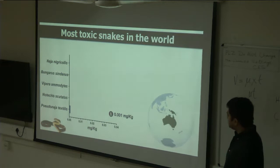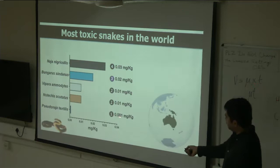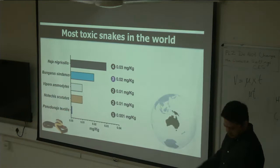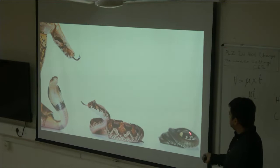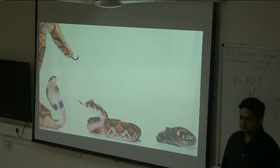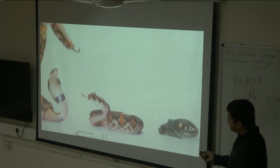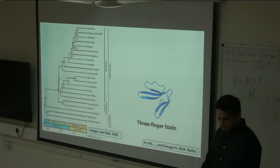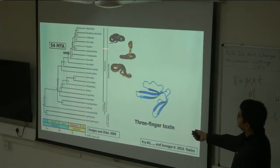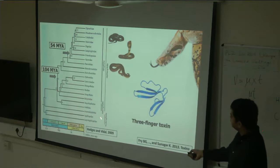What about boas and pythons — are they venomous? They don't make use of venom to capture prey. But surprisingly, when we looked at their saliva and venom glands, we actually found three-finger toxins there. This shows that venom did not evolve 54 million years ago in the common ancestor of advanced snakes, but actually evolved somewhere in the common ancestor of all snakes in the world — and there is also evidence it evolved even earlier in the common ancestor of all snakes plus the Anguimorpha lizards.